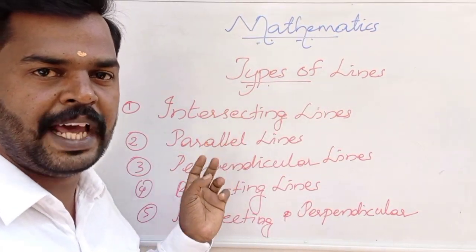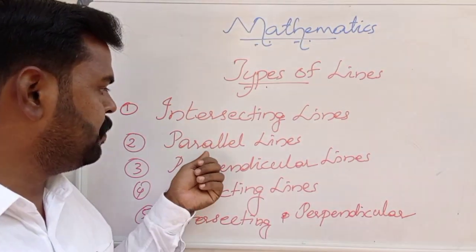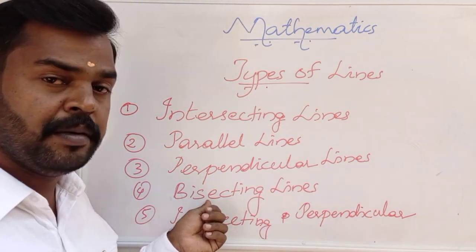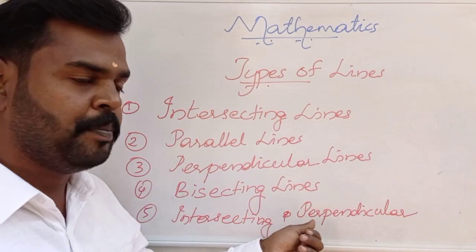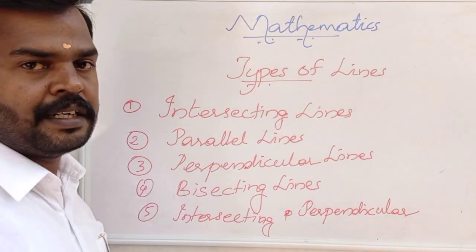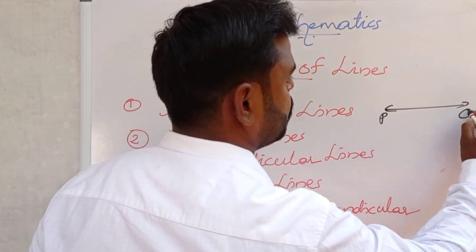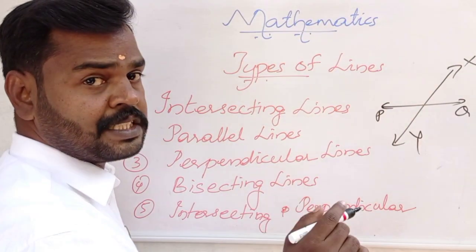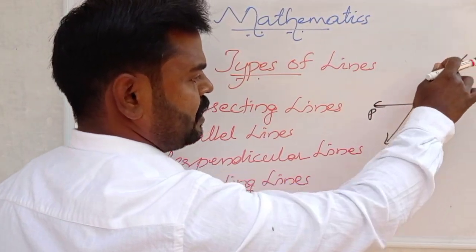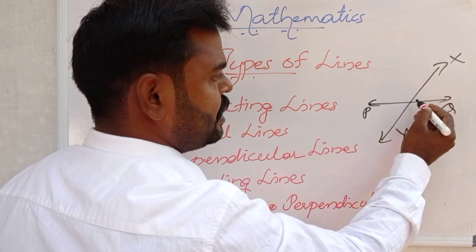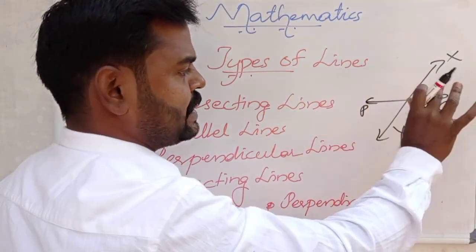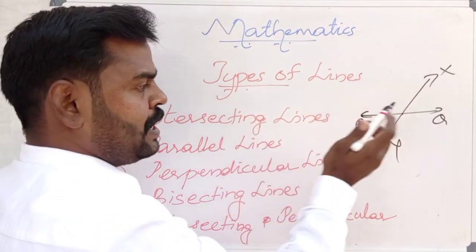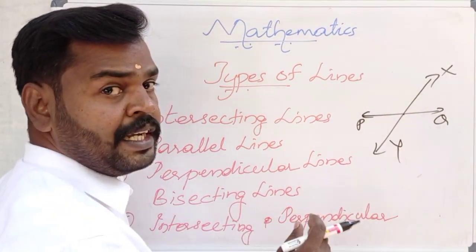Now let us discuss types of lines. There are five types of lines: intersecting lines, parallel lines, perpendicular lines, bisecting lines, and intersecting and perpendicular lines. The first one is intersecting lines. Suppose one line PQ and next line XY — these two lines just touch at one point. This point is called the intersecting point. Lines PQ and XY are called intersecting lines because they touch at one point.